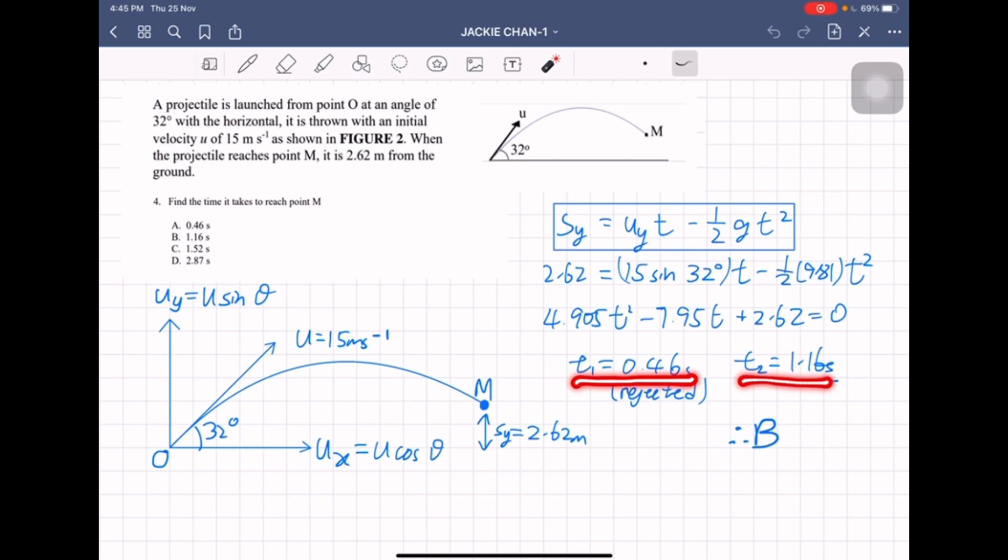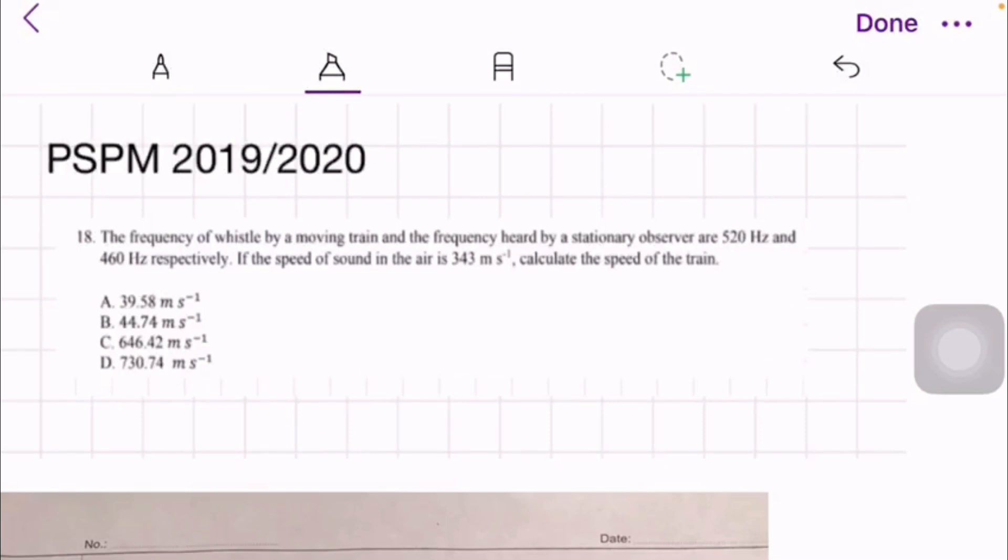So this is the second time above 2.62 meters. The point M is the second time of reaching above from ground 2.62 meters, so the time taken to reach point M is 1.16. So the answer is B. Okay, that's all and thank you.